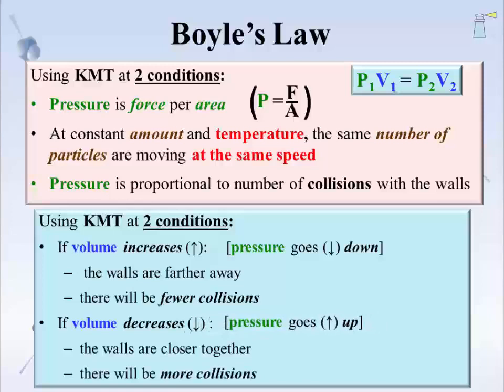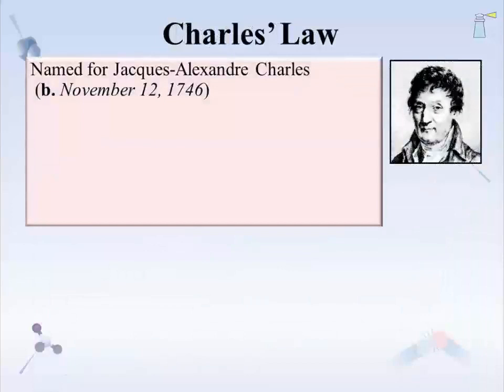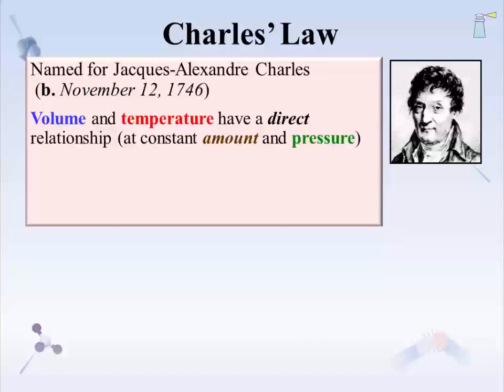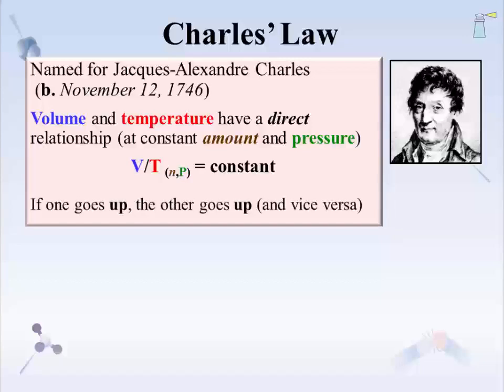There are rational descriptions like this for each gas law, including the next one: Charles' Law. This law says that volume and temperature have a direct relationship at constant amount and pressure. The equation is that the volume value over the temperature value equals a constant. Amount and pressure cannot change for this law to hold. The equation tells us that if one of these two properties goes up, the other one also goes up; if one goes down, the other one also goes down.